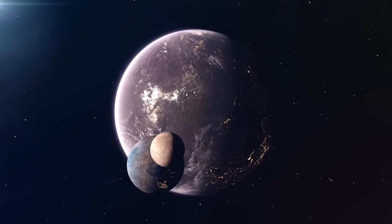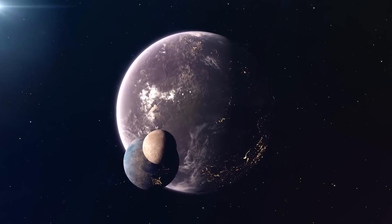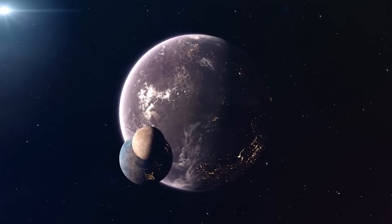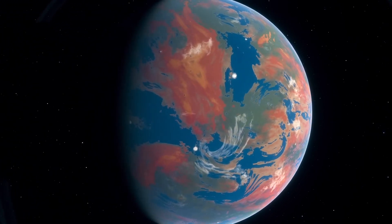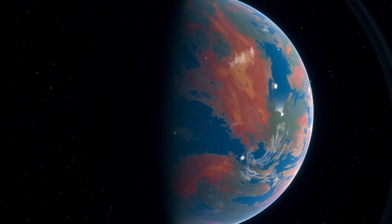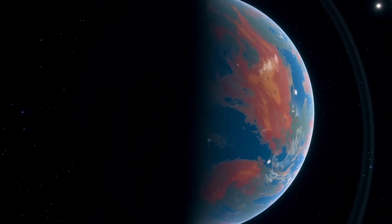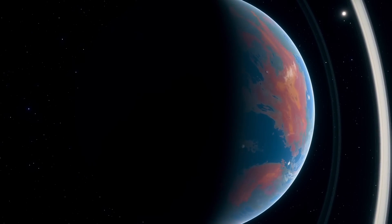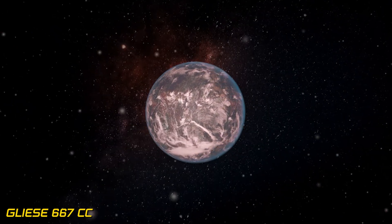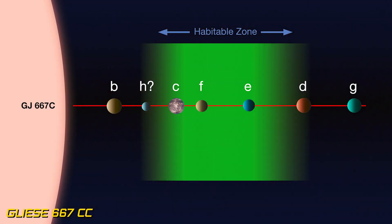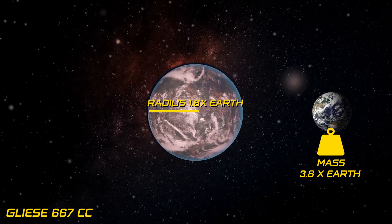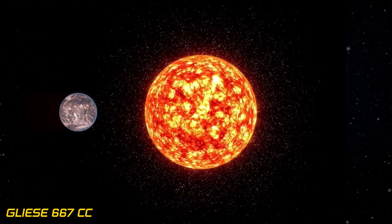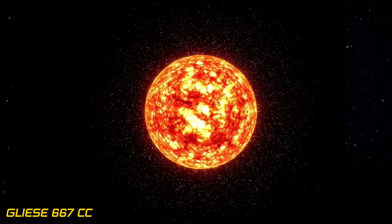Now let's shift our focus to the trio of potentially habitable planets within the Gliese 667 system. Nestled further away from their stellar companion, these planets boast masses ranging from 1 to 5 times that of Earth, making them prime real estate for habitability. Leading the pack is Gliese 667-CC, snugly nestled in the inner edge of the star's habitable zone. With a mass roughly 3.8 times that of Earth and a radius 1.8 times larger, this planet enjoys a year lasting just 28 Earth days.